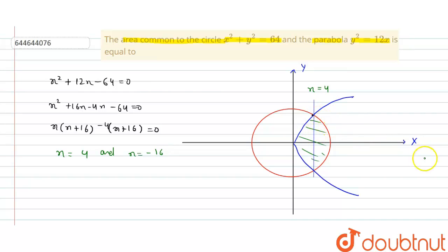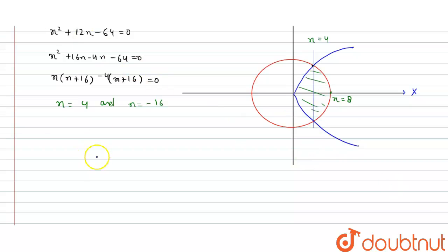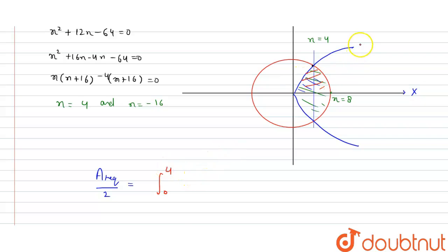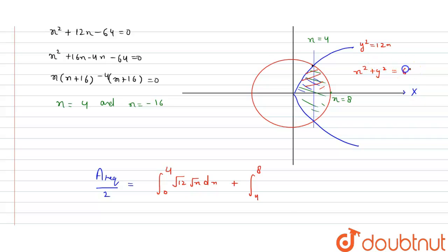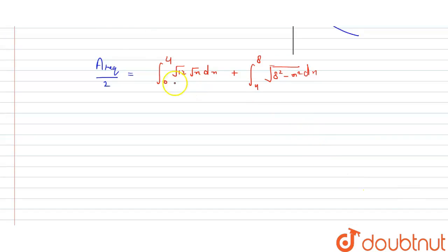We integrate first from x = 0 to x = 4, and this point is x = 8 because the radius is 8. We find the required area by symmetry, computing half the area first — that is, only the upper region. From 0 to 4, the curve is the parabola y² = 12x, so y = √(12x). From 4 to 8, the curve is the circle x² + y² = 64, so y = √(64 − x²).